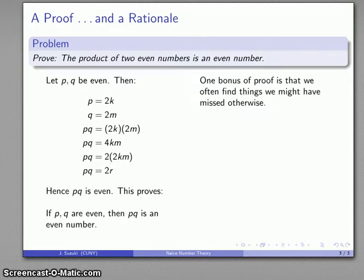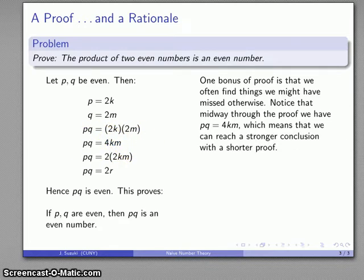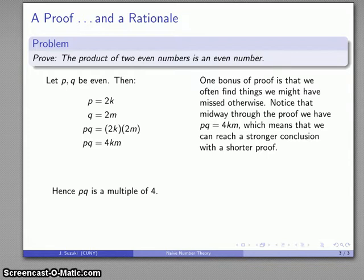In this particular case, if I take a look at this statement about midway through here, pq equals 4 times km, what I can conclude from there is that I can actually get a stronger conclusion with a shorter proof if I just drop these last two lines here and focus on this line. I have pq equals 4 times something, and what that tells me is pq is not just even but it is in fact a multiple of 4. Strictly speaking, the problem is to prove that the product of two even numbers is an even number, so the solution to the problem at hand is our proof here.